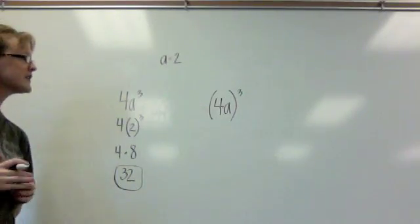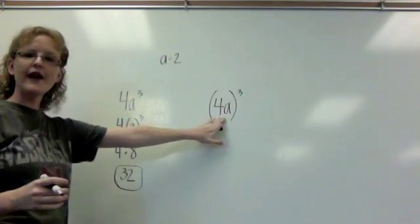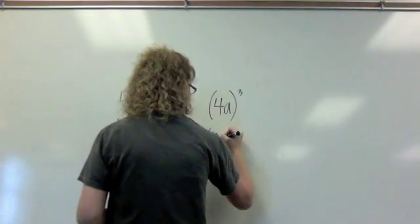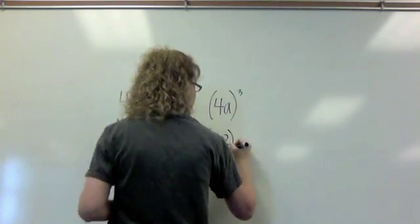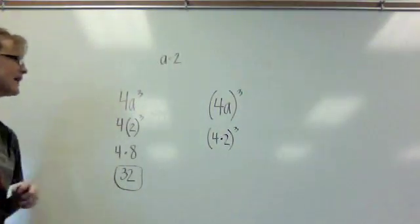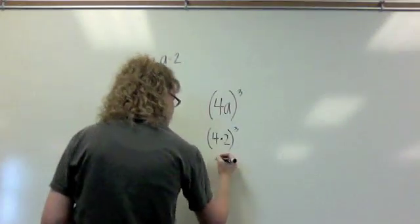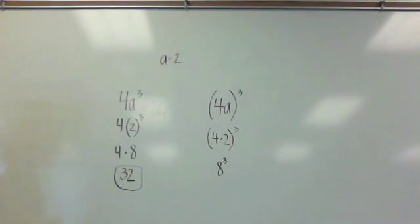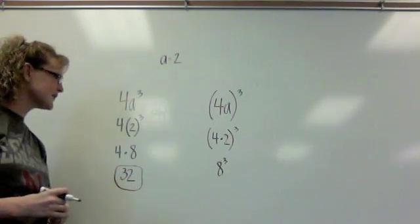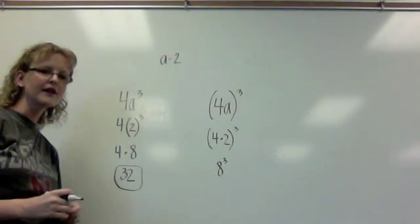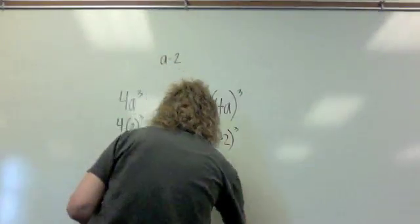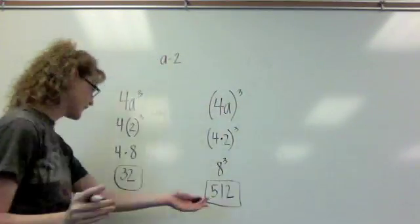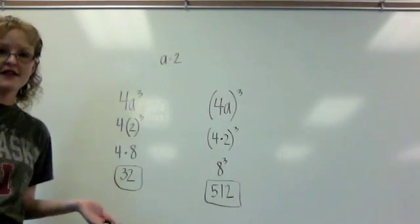If I look at my other scenario, this time I have 4A inside of the parentheses, which means I need to take 4 times 2 first, and then raise it to the third power. So if I do that, I'm taking 4 times 2, which is 8. Now I'm raising 8 to the third power. If I look at 8 to the third power, that's 8 times 8, which is 64, and 64 times 8, which gives us 512. Clearly these are not the same.